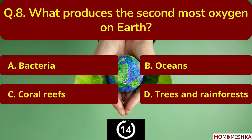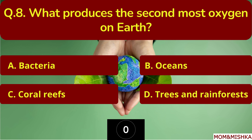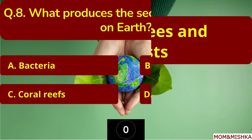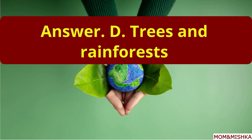What produces the second most oxygen on earth? Option D — trees and rainforests.